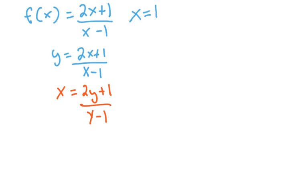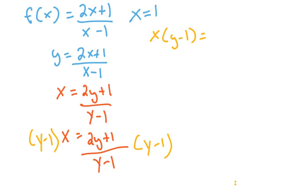So let me change color so you can see this. So x times 2y plus 1 over y minus 1. I'm going to multiply this by y minus 1. And then this is going to be times y minus 1. So we do that. Now we end up with x times y minus 1 equal to 2y plus 1. Because these cancel out here. And so now we're left with this.